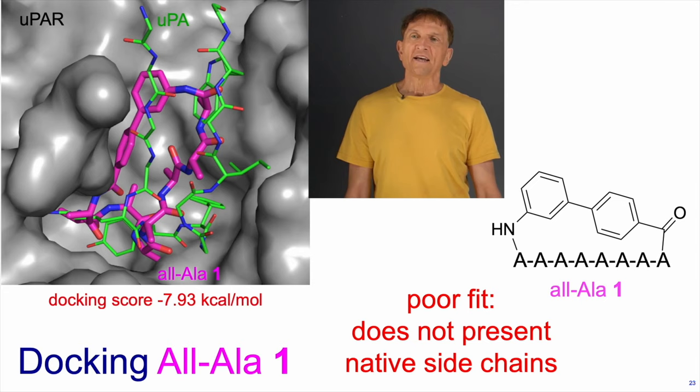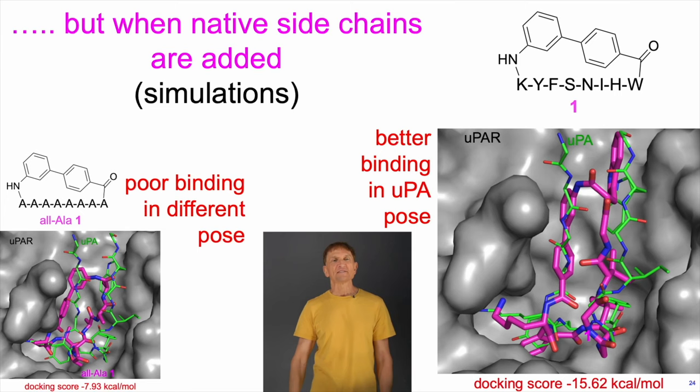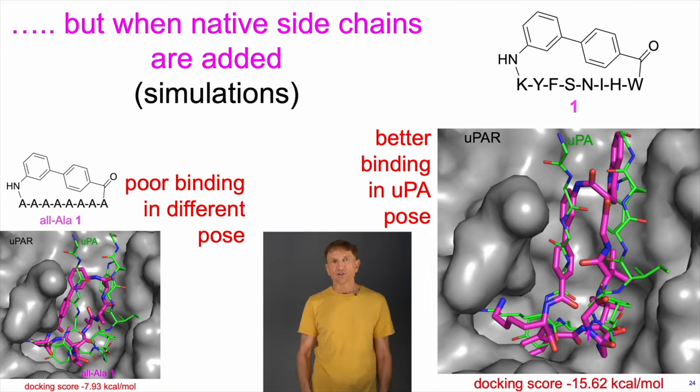So then what do we do? We adjust the molecule — we put in the native side chains corresponding to where our analog overlaid — and then we repeat the docking procedure. The molecule moves into a binding pose which is similar to that seen in the protein-protein interaction, and we get a better docking score indicative of a higher affinity for UPAR. So that validates virtually, and now it's necessary to get into the lab and make these things.